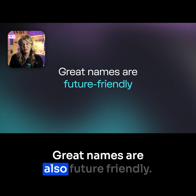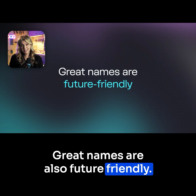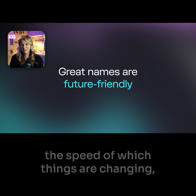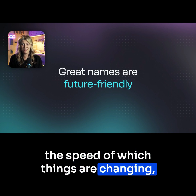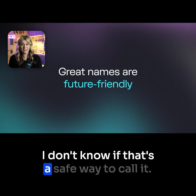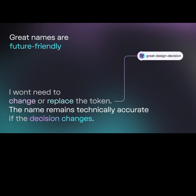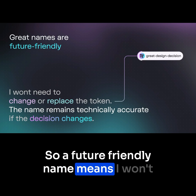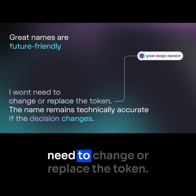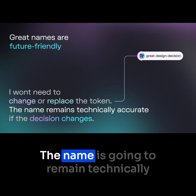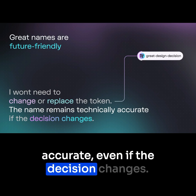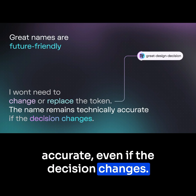Great names are also future-friendly. Some people say future-proof, but at the speed at which things are changing, I don't know if that's a safe way to call it. A future-friendly name means I won't need to change or replace the token — the name is going to remain technically accurate even if the decision changes.